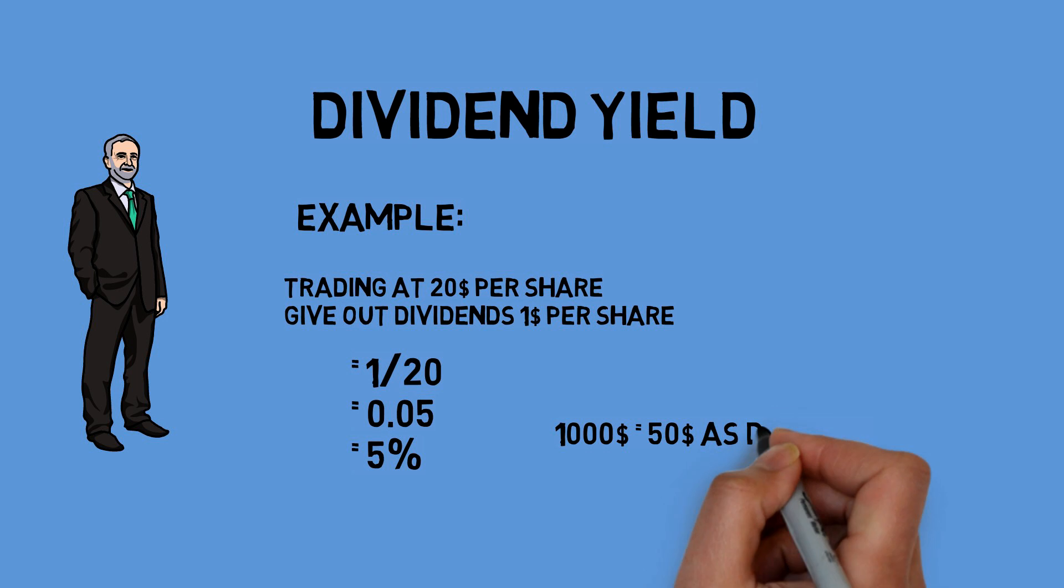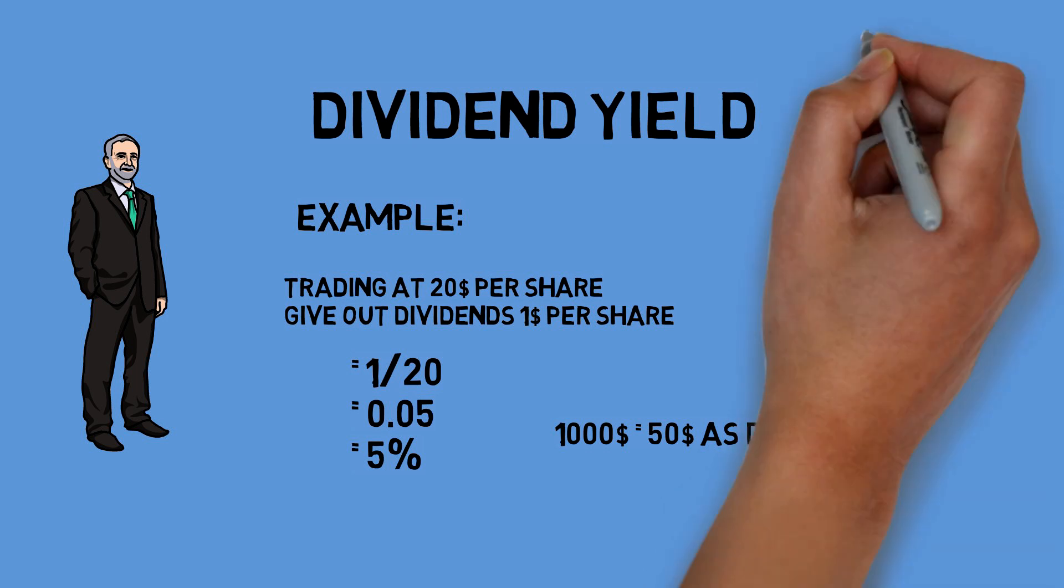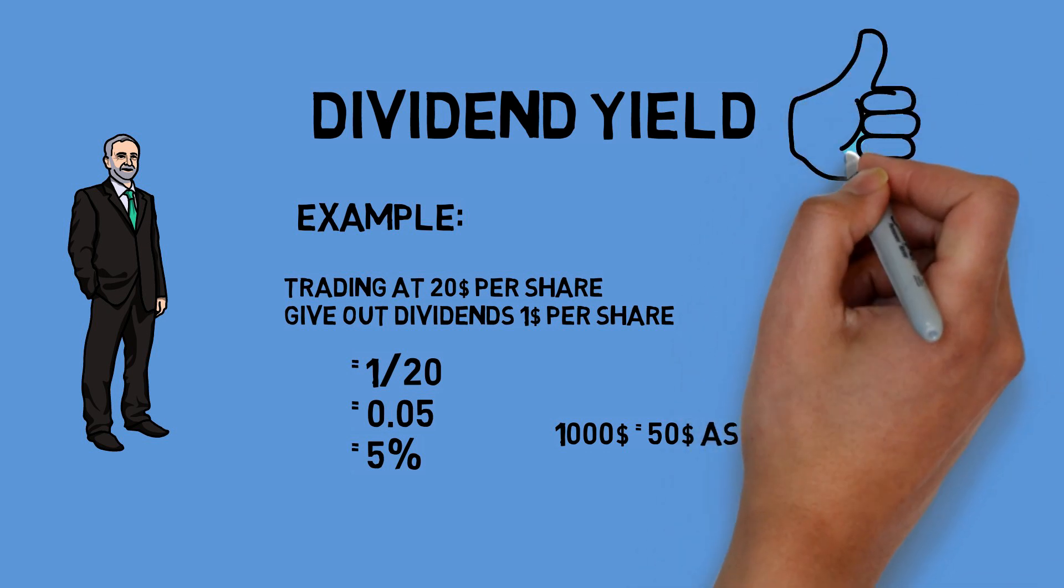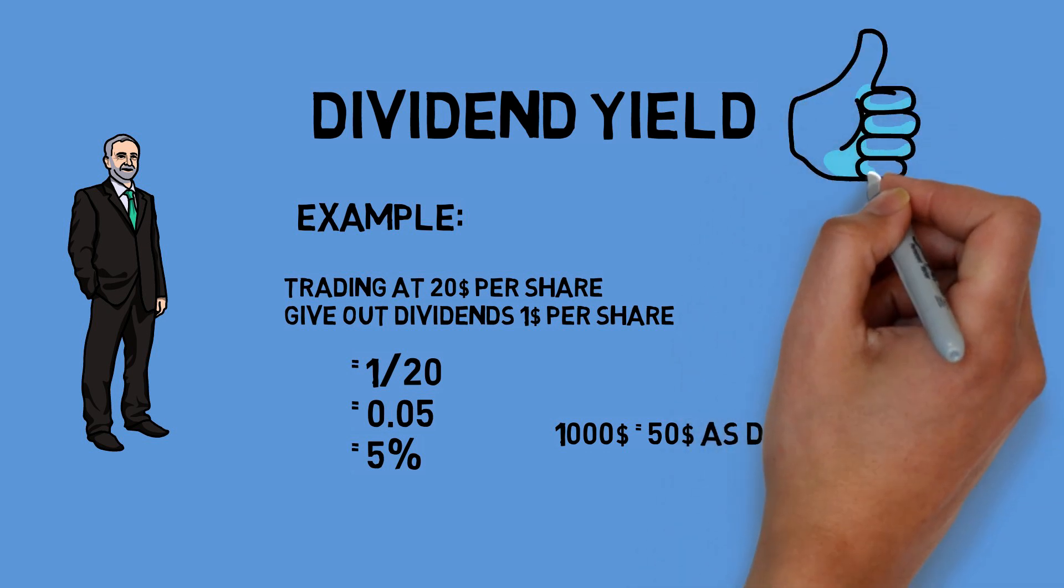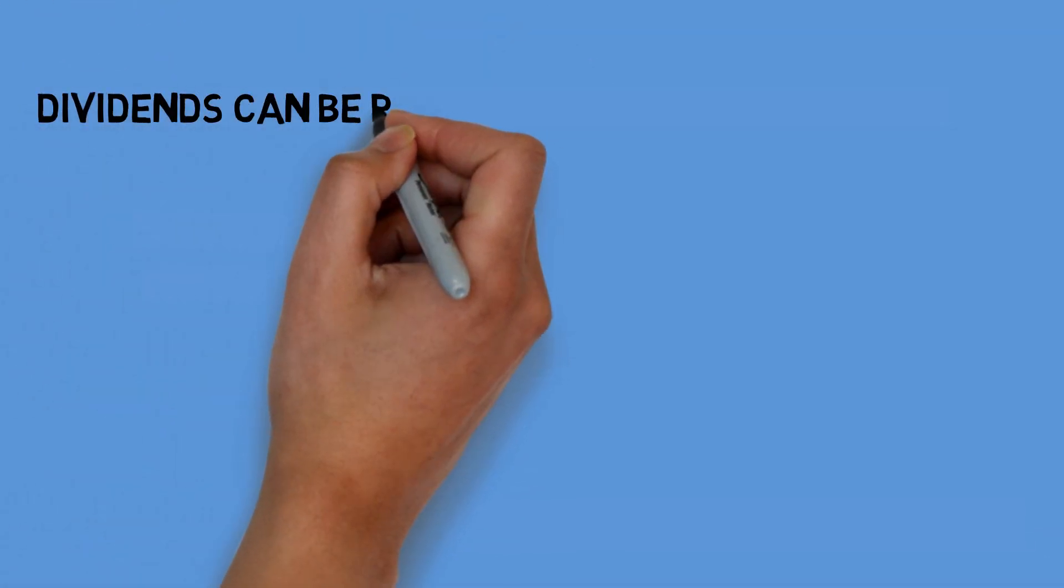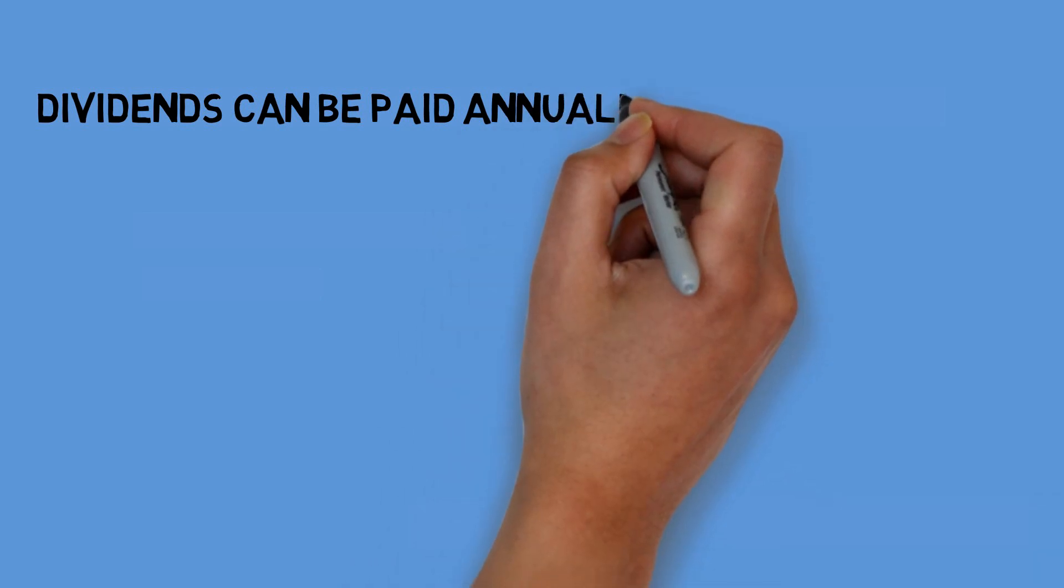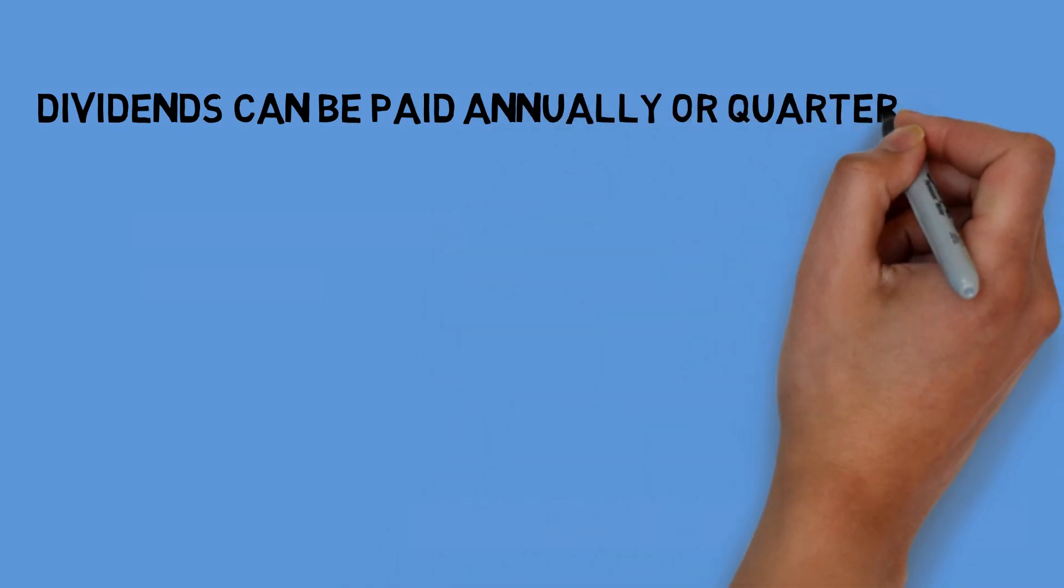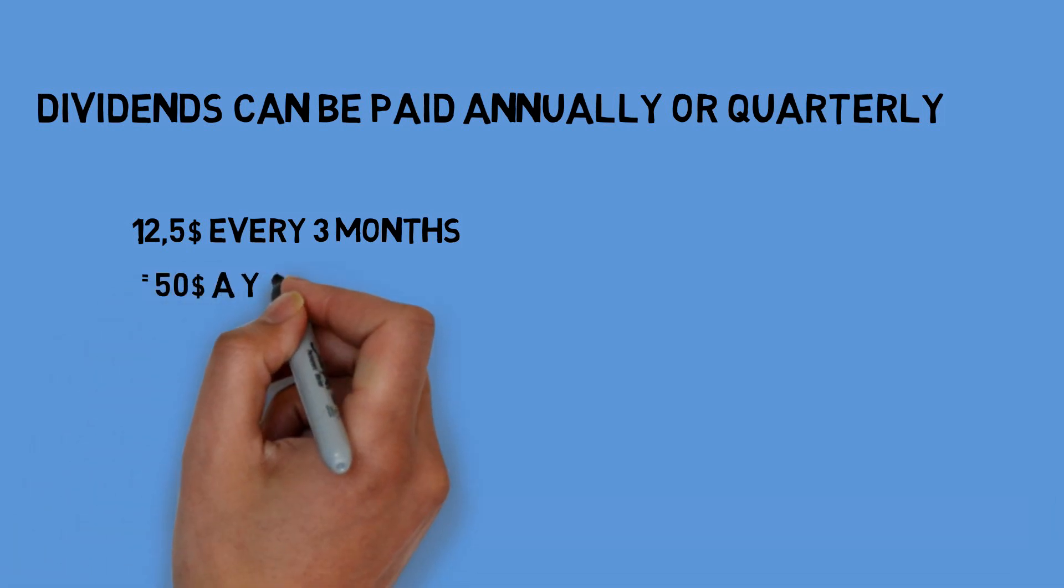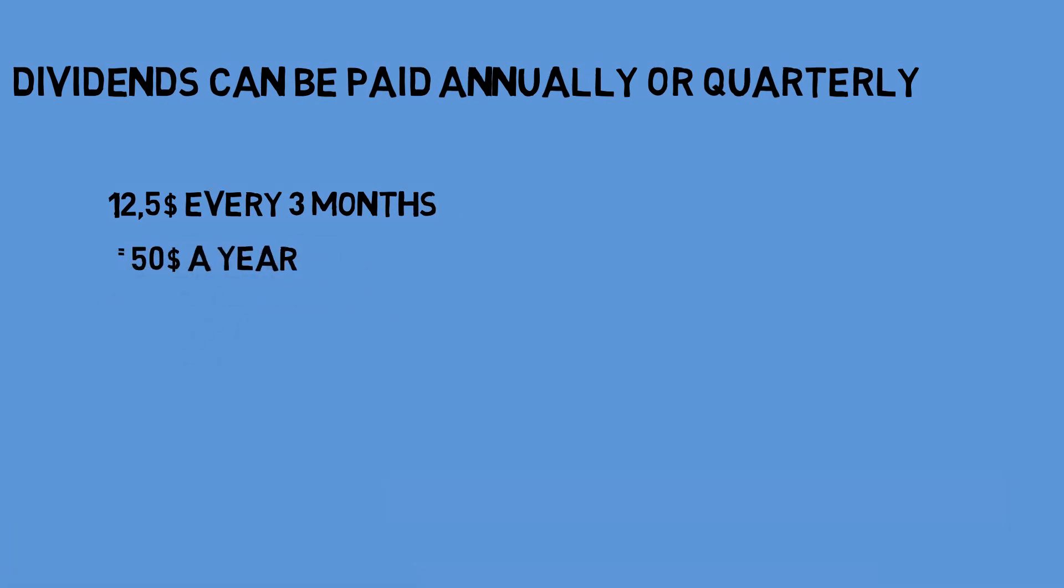If you invest $1,000, then you will get $50 annually. So a high dividend yield can be one major criteria for dividend investors in making investments. Keep in mind that dividends can be paid annually as well as quarterly, although this does not change the total amount of money that you get. Using the example before, you will make $12.50 every 3 months, which will accumulate to $50 a year.